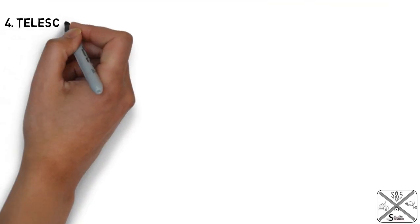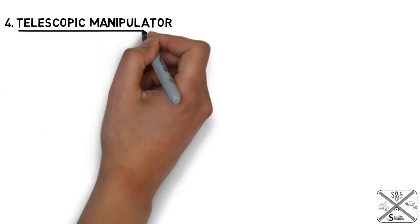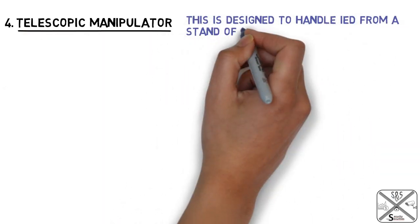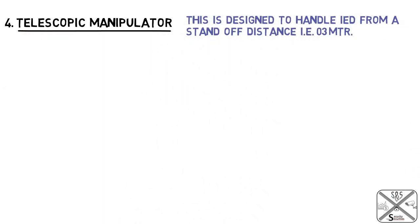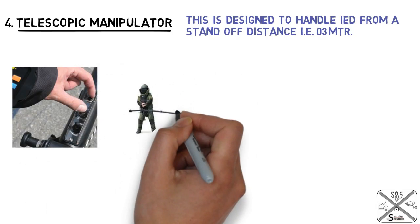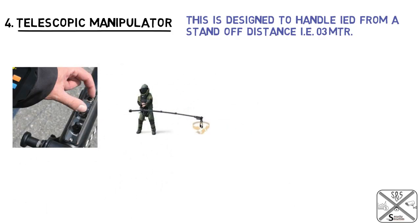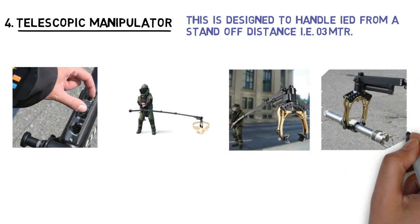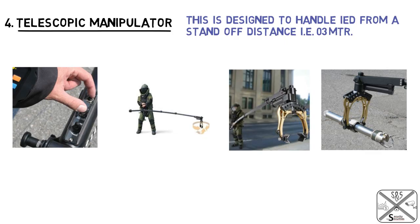Next is the telescope manipulator. This is designed to handle an IED from a stand-off distance. It is an electrically operated mechanical grab with a telescopic arm which can lift up to 10 kg from a distance.